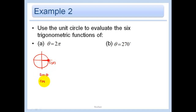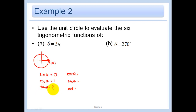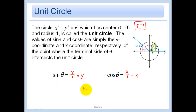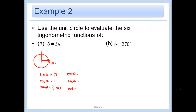So sine is just the y-coordinate, or 0. Cosine is the x-coordinate, or 1. Tangent is y over x: 0 over 1, which is 0. Cosecant: flip 0 over 1 to get 1 over 0 — that is undefined. Secant: flip 1 to get just 1. Cotangent: flip 0 over 1 to get 1 over 0 again — undefined.